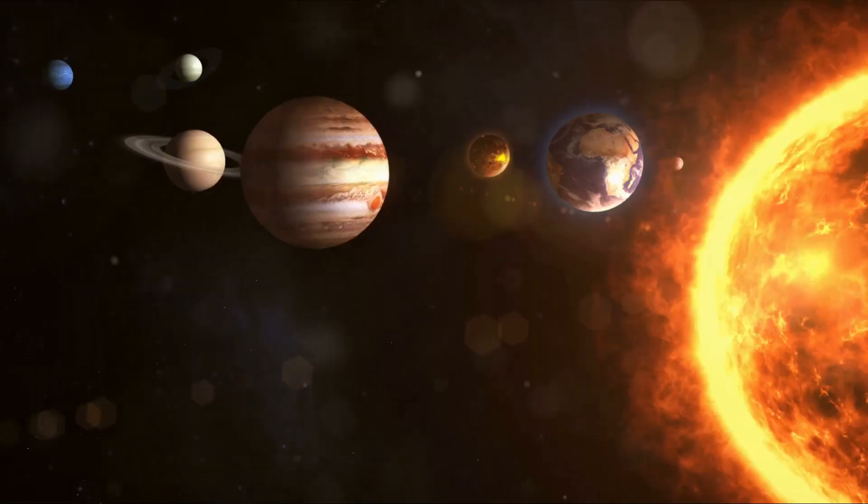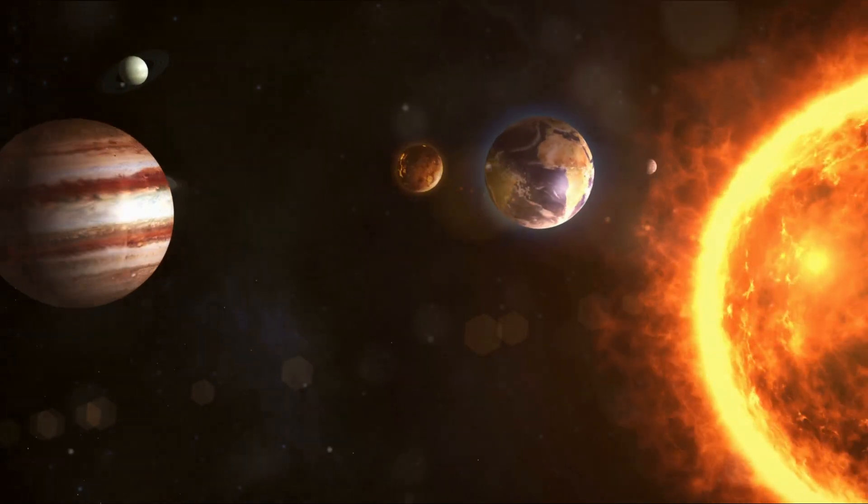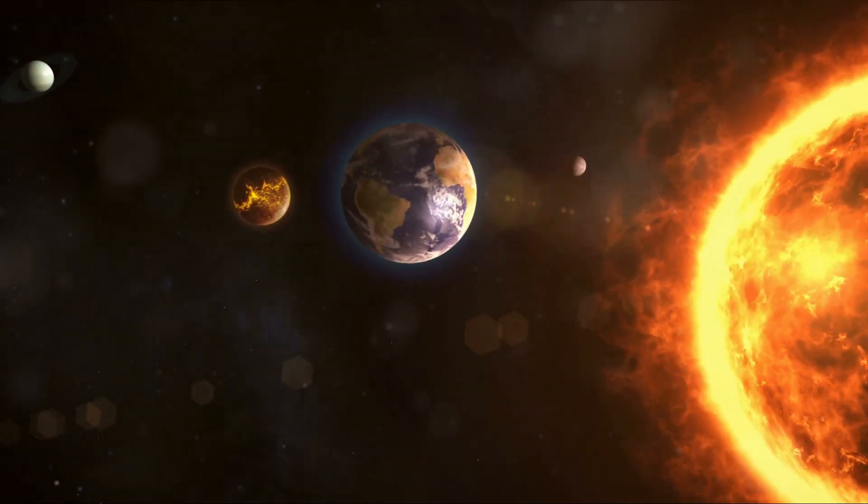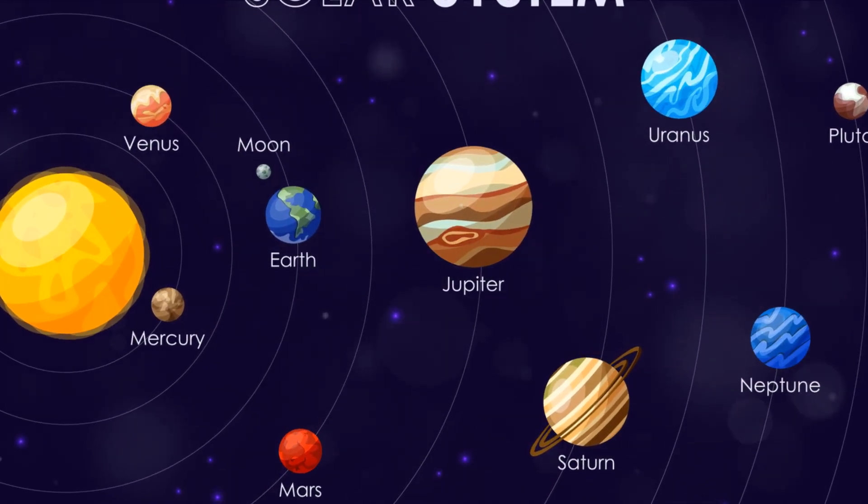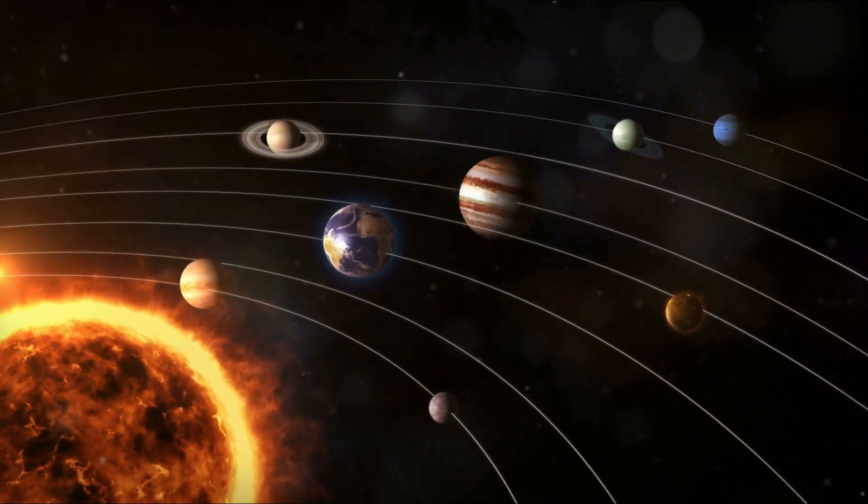Mercury and Venus will likely be engulfed when the Sun becomes a red giant. The outer planets, meanwhile, will experience a warmer climate as the Sun expands. In the end, the Sun's death will bring about a new era in the solar system.